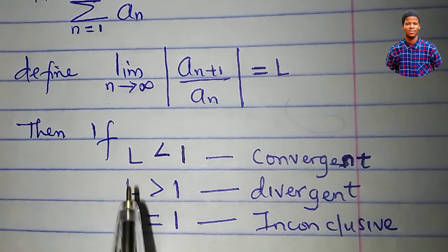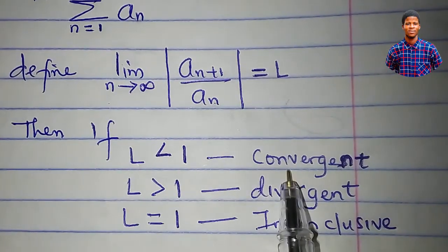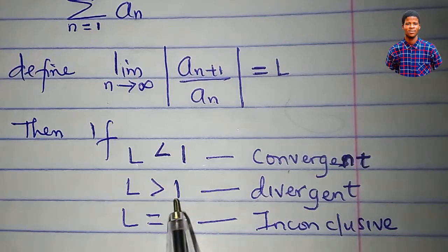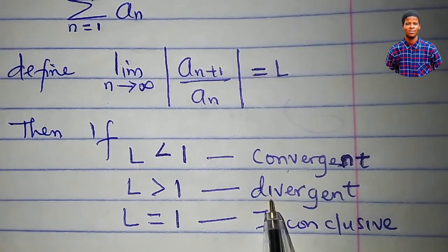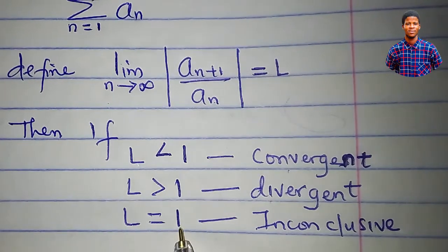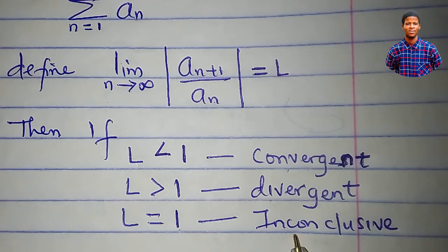If the limit L is less than 1, the series is convergent. If the limit is greater than 1, the series is divergent. And if the limit is equal to 1, the test is inconclusive. This is the D'Alembert ratio test. So let's apply it to determine the convergence or divergence of some series.